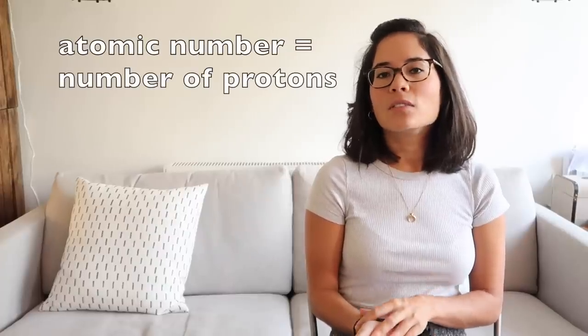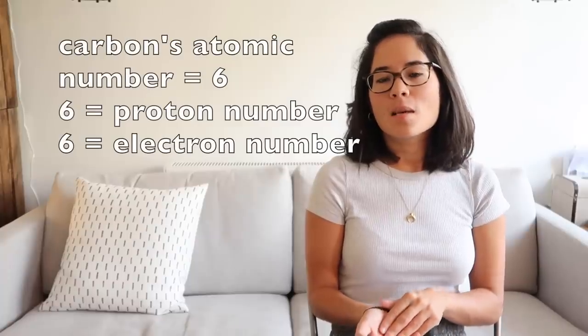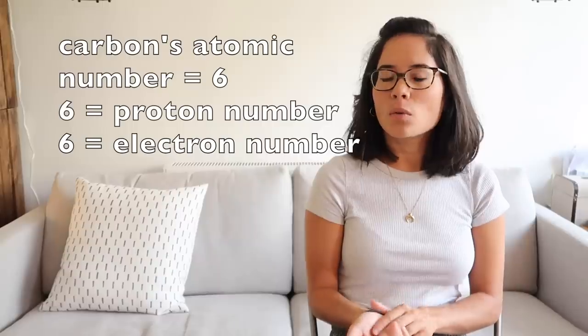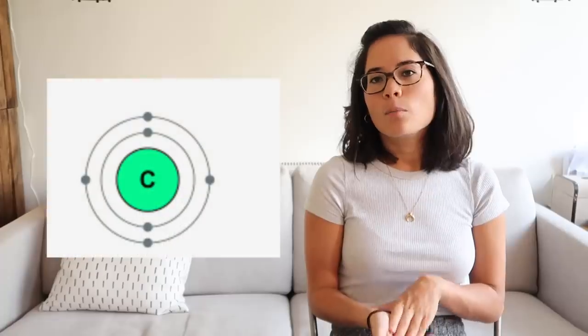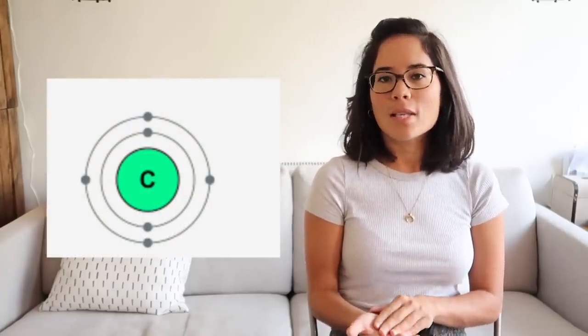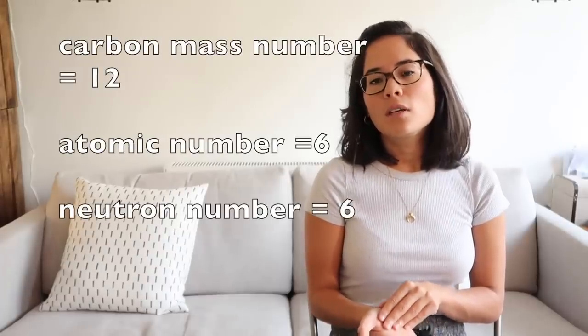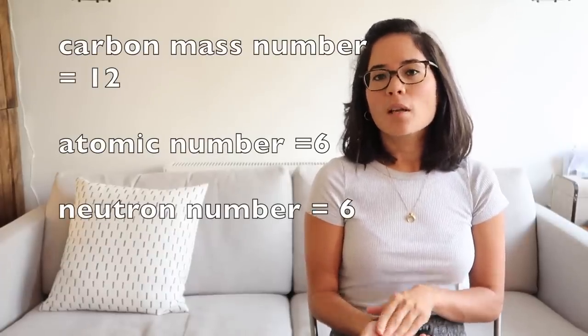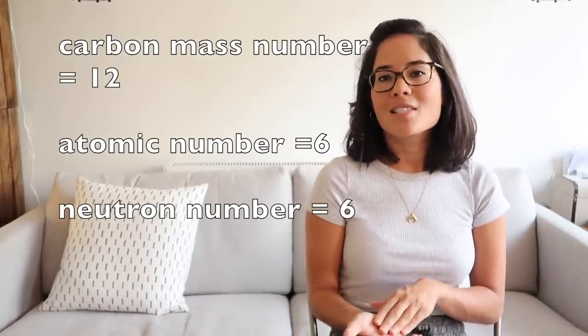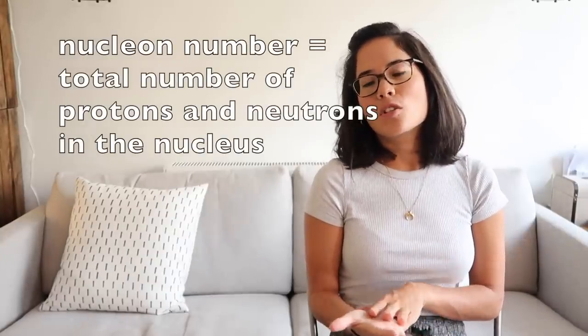For carbon: atomic number 6 means 6 protons and, since atoms are neutral, 6 electrons. Its electronic configuration is 2,4 — two electrons in the first shell and four in the second. Mass number 12 minus atomic number 6 gives 6 neutrons. The nucleon number is just the total particles in the nucleus — protons plus neutrons — so it equals the mass number.